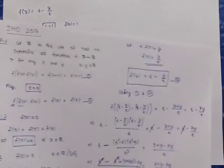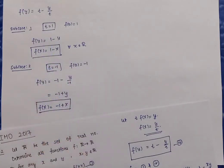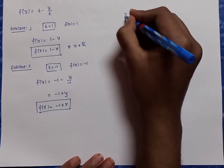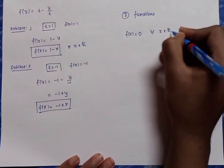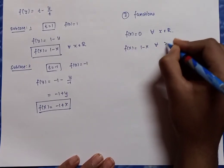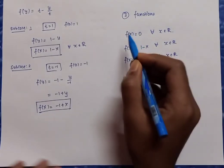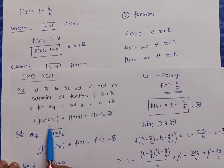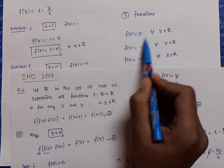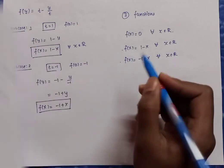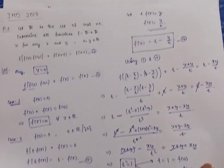We have found three functions in total: one constant function from Case 1 and two linear functions from Case 2. To summarize: f(x) = 0 for all x in R; f(x) = 1 − x for all x in R; and f(x) = x − 1 for all x in R. Since this is an IMO problem, we must verify all three functions satisfy the original functional equation. I have already shown how to verify the first; similarly verify the second and third. These three functions are the complete solution.